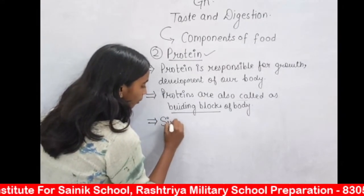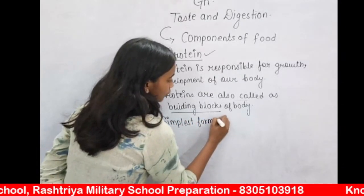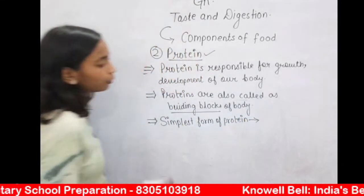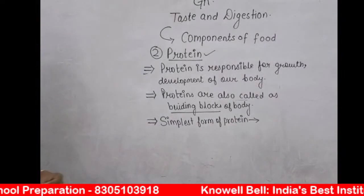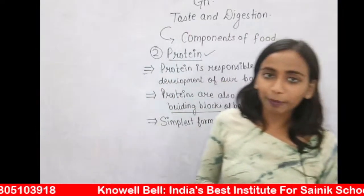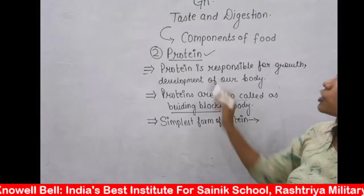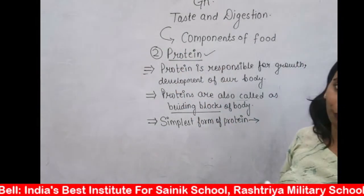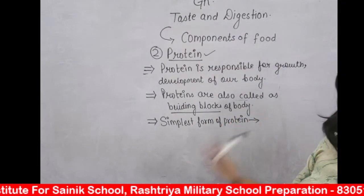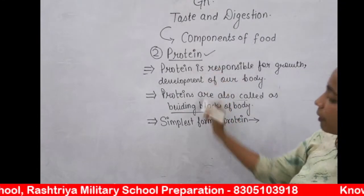Proteins are clear. Next, we will study about vitamins. The third component of food is vitamins, and vitamins and minerals we are going to study together. When you consume food — chapatis, vegetables, rice — you are majorly consuming carbohydrate, then protein. Vitamins and minerals are those components of food that are required by our body in a very small amount, unlike carbohydrates which are required in a very large quantity.